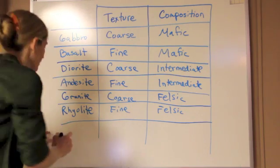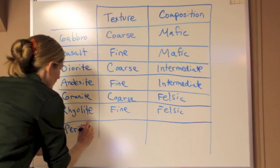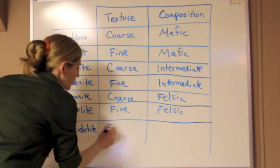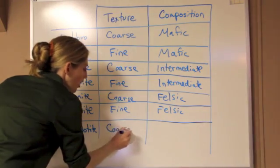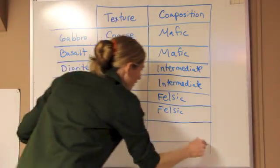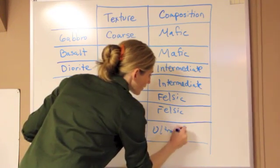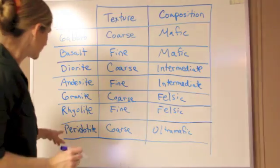The last thing I'll list on here would be peridotite. Peridotite is going to be coarse-grained. It's always coarse-grained because it's forming down within the mantle. It's a mantle rock. And then it's ultramafic. That would be the last one to list on here.